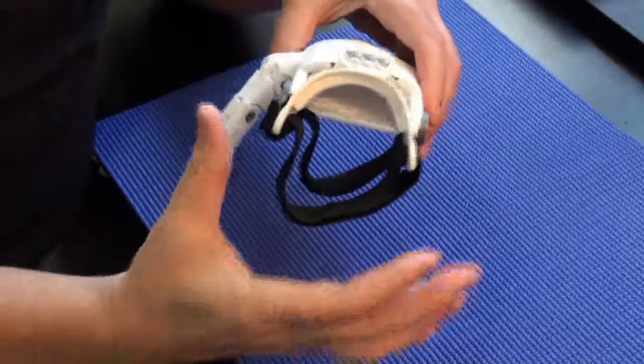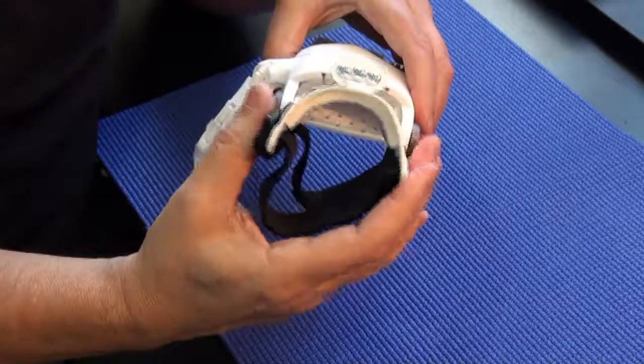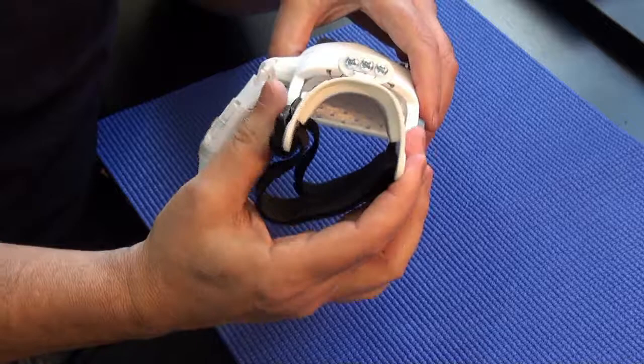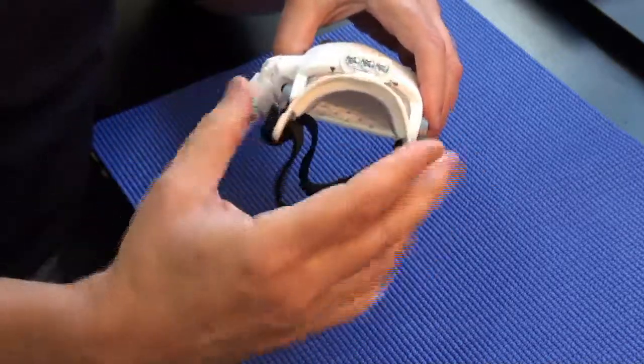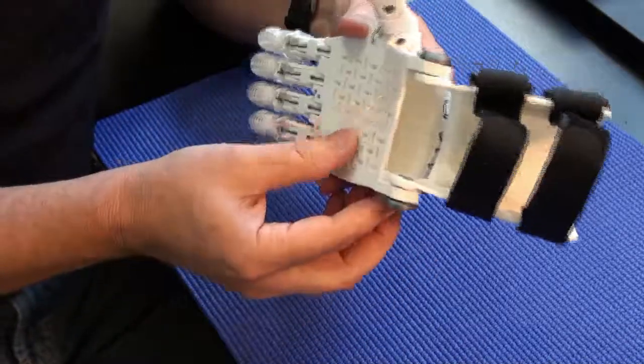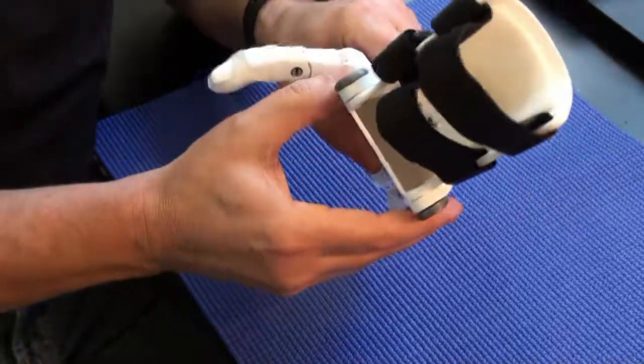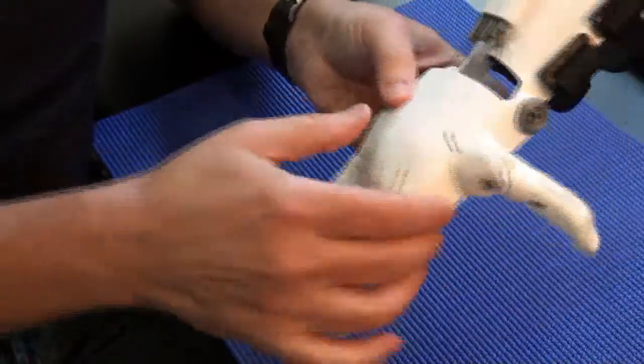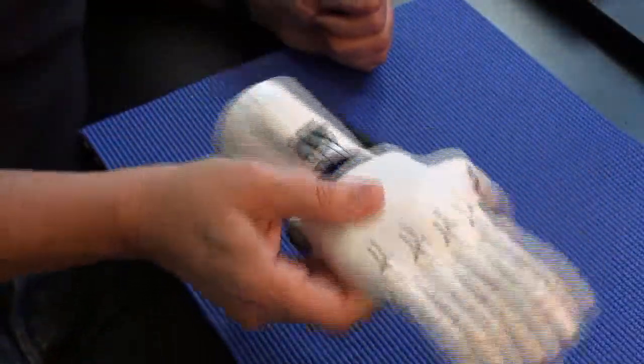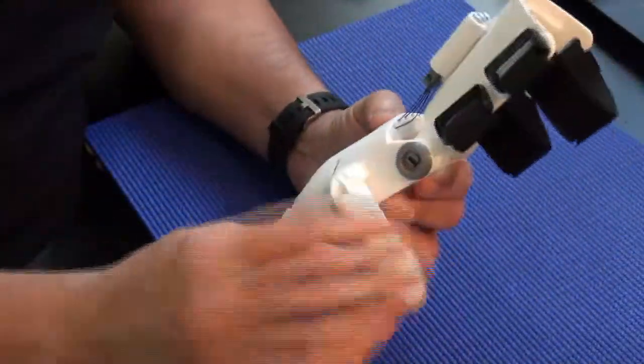Let's look at the durability. You can see that the thermoformed gauntlet is very strong as a result of being bent after printing rather than having all those Z layers. The palm is very strong because it has the integral palm, so there's no flexing there. I can shake this violently. No pins come out.